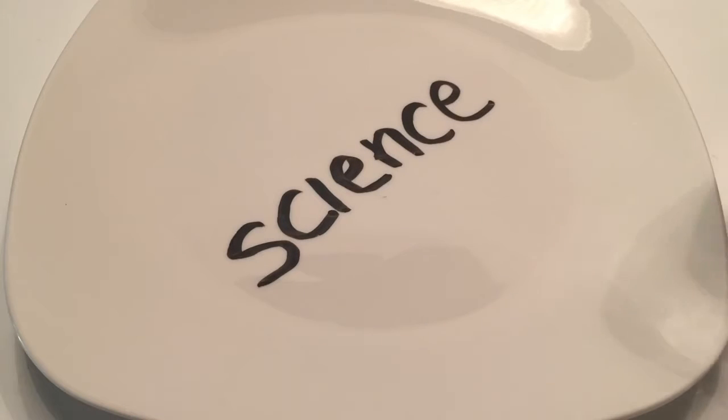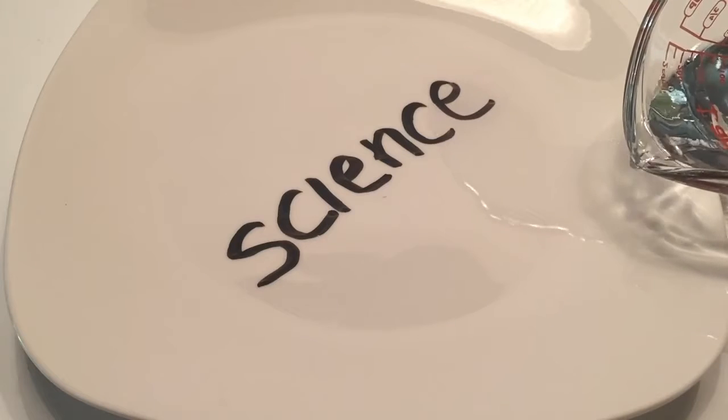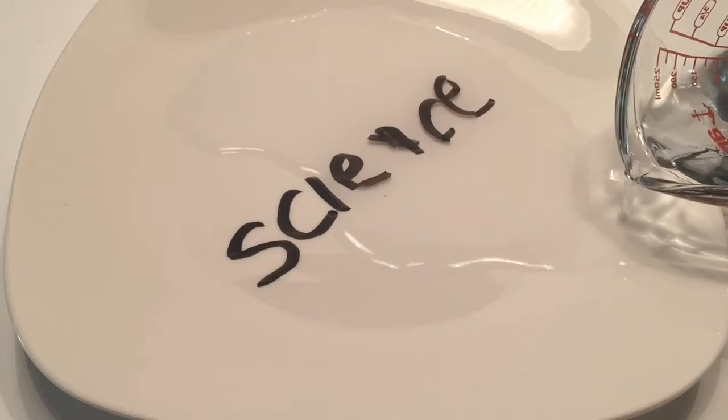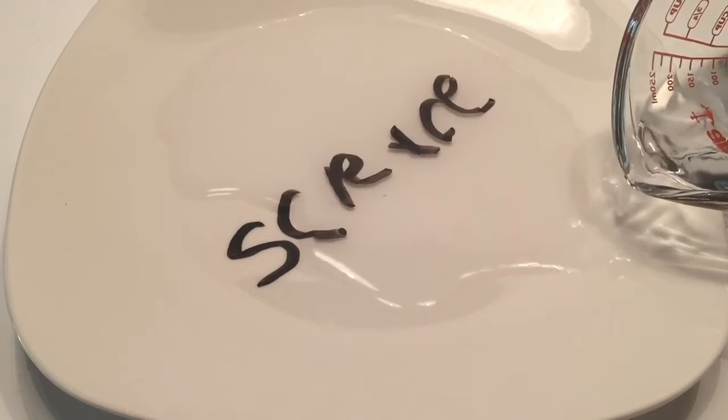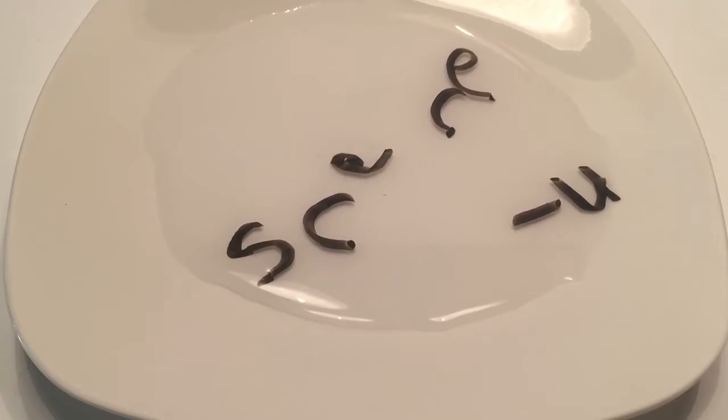And then you're going to take your water immediately afterwards, just room temperature, and pour from the edge very slowly. If you pour too fast, it might just dissolve all the letters. And slowly, as you can see, you can start seeing the words are starting to come right off the plate. And there you have it.